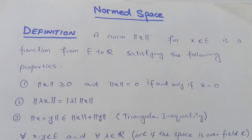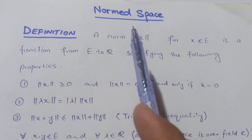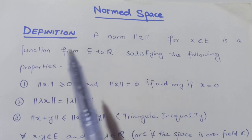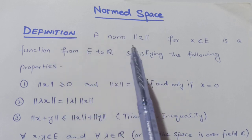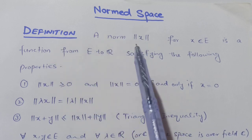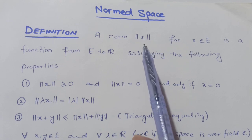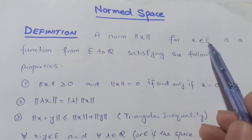Assalamu alaikum. Today we are going to discuss norm spaces in functional analysis. First of all, we will look into the definition of a norm space. This symbol X is for norm space.